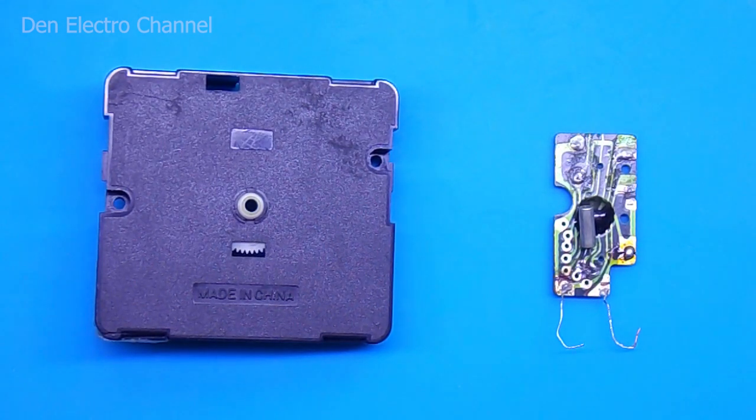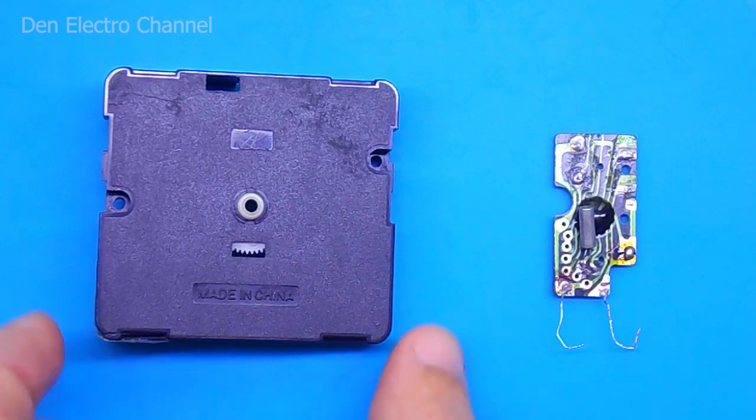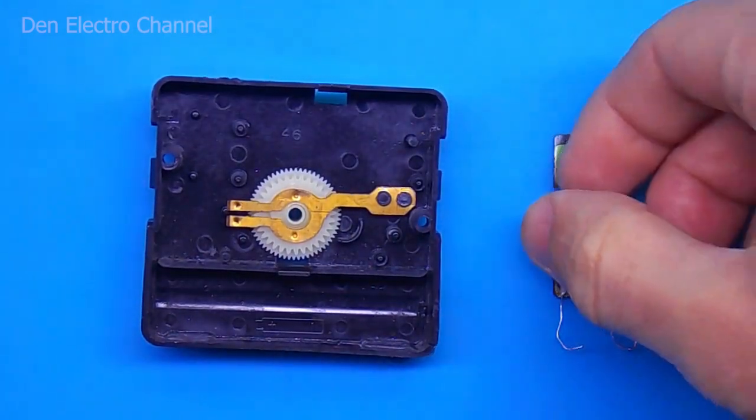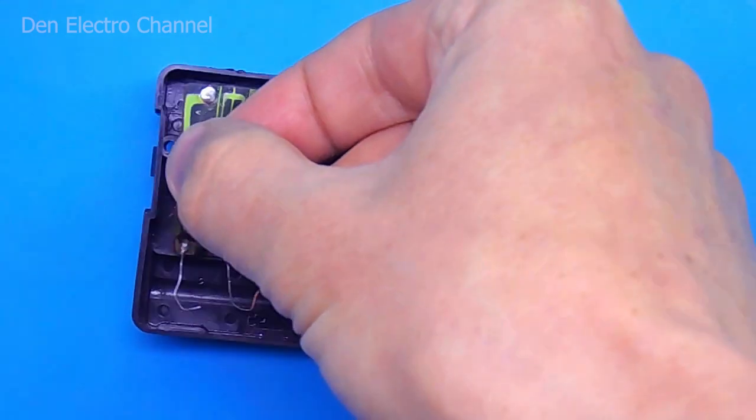Such boards can be pulled out of the cases of such old analog clocks. The boards in them are usually always of the same type, but not all have an alarm clock.